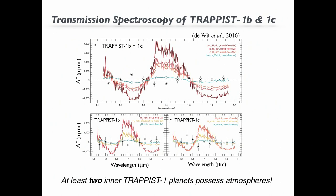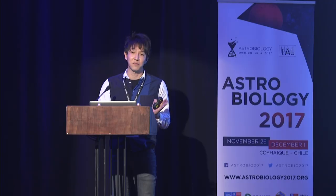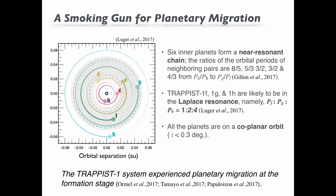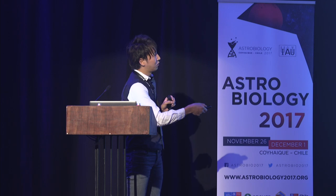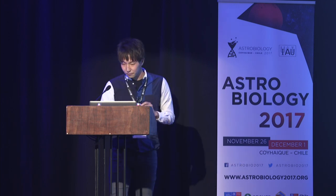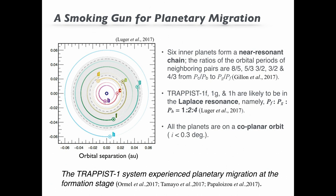We have one important key to know how TRAPPIST-1 planets form. All seven planets form resonant chains on almost the same orbital plane. Specifically, the ratios of the orbital periods of neighboring planets are integer ratios, like 8 to 5, 5 to 3, and so on. In addition, the three outer planets are most likely in Laplace resonance — a 1 to 4 ratio. Another Laplace resonance system that we know is the Galilean satellites in our solar system.